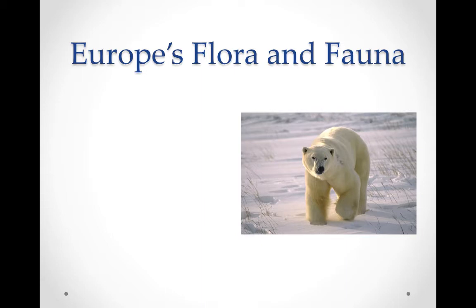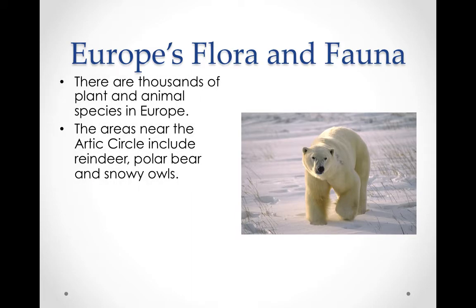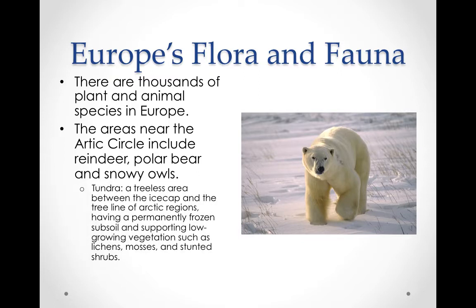Europe's flora and fauna — a fancy way of saying plants and animals — includes thousands of species. The areas near the Arctic Circle include reindeer, polar bears, and snowy owls. There's an area called the tundra, which is a treeless area between the ice cap and the tree line of Arctic regions, with permanently frozen subsoil supporting low-growing vegetation such as lichens, mosses, and stunted shrubs.